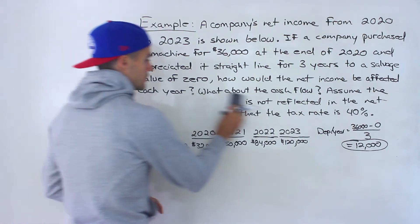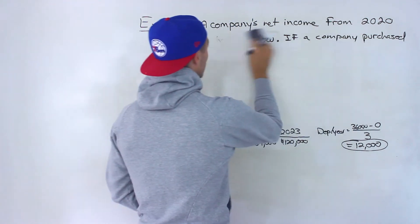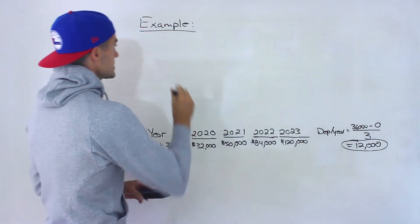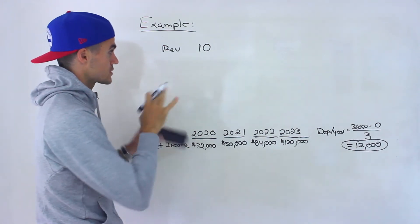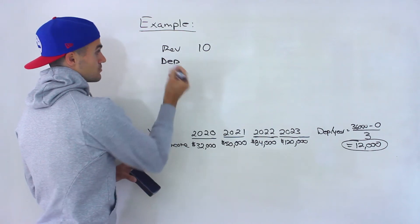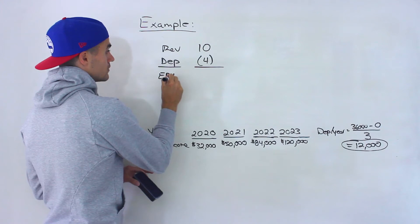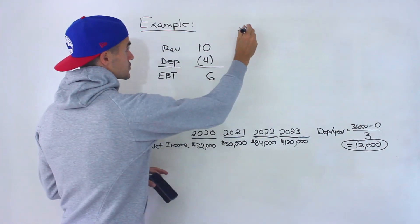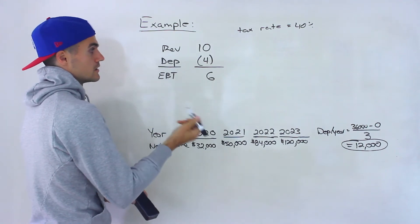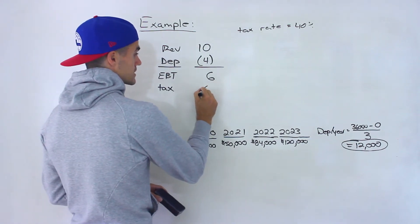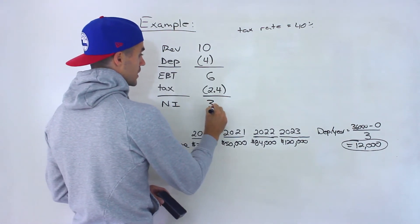To show how this works, let's start with a simple example. Let's say we have revenue of $10 and the only expense excluding taxes is depreciation of $4. So we'd have earnings before taxes of $6. With a tax rate of 40%, that's 2.4 in taxes, giving us a net income of 3.6.